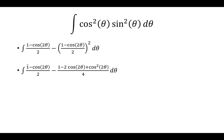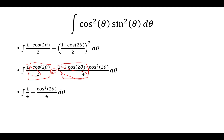We use algebra: we have 1/2 minus 1/4, which gives us 1/4. Then we have negative cosine 2θ minus negative 2 cosine 2θ over 4, which gives us 1/4. The negative cosine 2θ over 2 cancels with the negative 2 cosine 2θ over 4, so we're left with 1/4 minus cosine squared 2θ over 4.